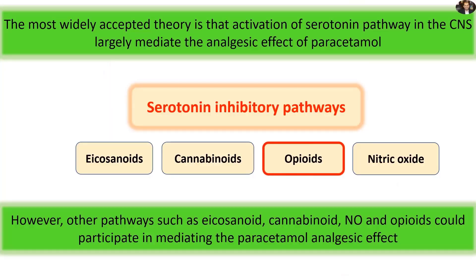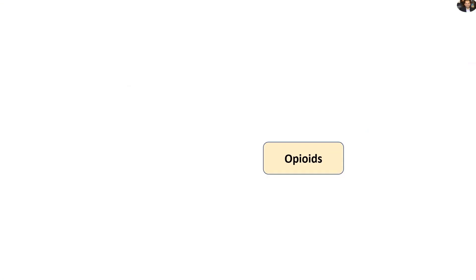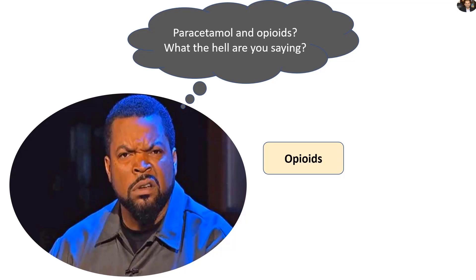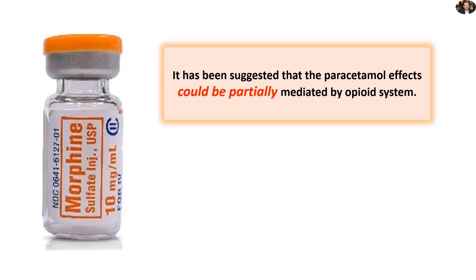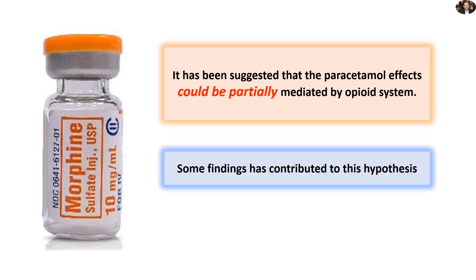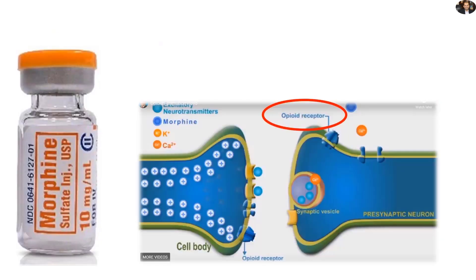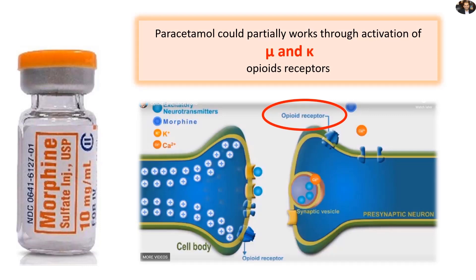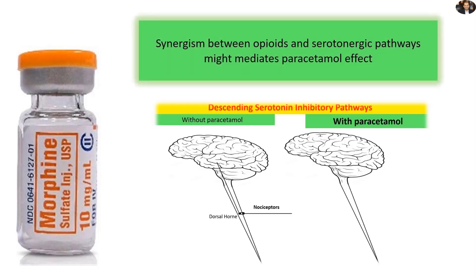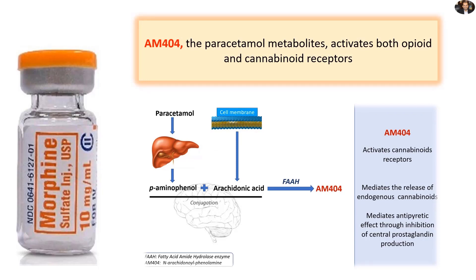And now we reach the last pathway in our lecture, which is the opioids pathway. It has been suggested that the effects of paracetamol could be partially mediated by the opioid system. Some findings have contributed to this hypothesis: paracetamol could partially work through activation of Mu and Kappa opioid receptors; synergism between opioids and serotonergic pathways might mediate paracetamol effects; and AM404, the paracetamol metabolite, activates both opioid and cannabinoid receptors.